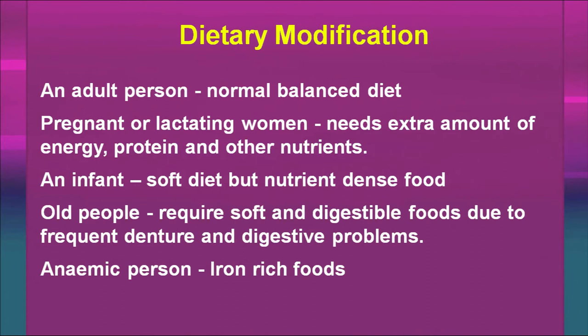During infancy, there is a need for soft-type but nutrient-dense foods. For older people also, there is a need for a change in consistency — they need soft, digestible foods because they may have problems with dentures or digestion. For an anemic person, you require an iron-rich diet which should also include lots of vitamin C.